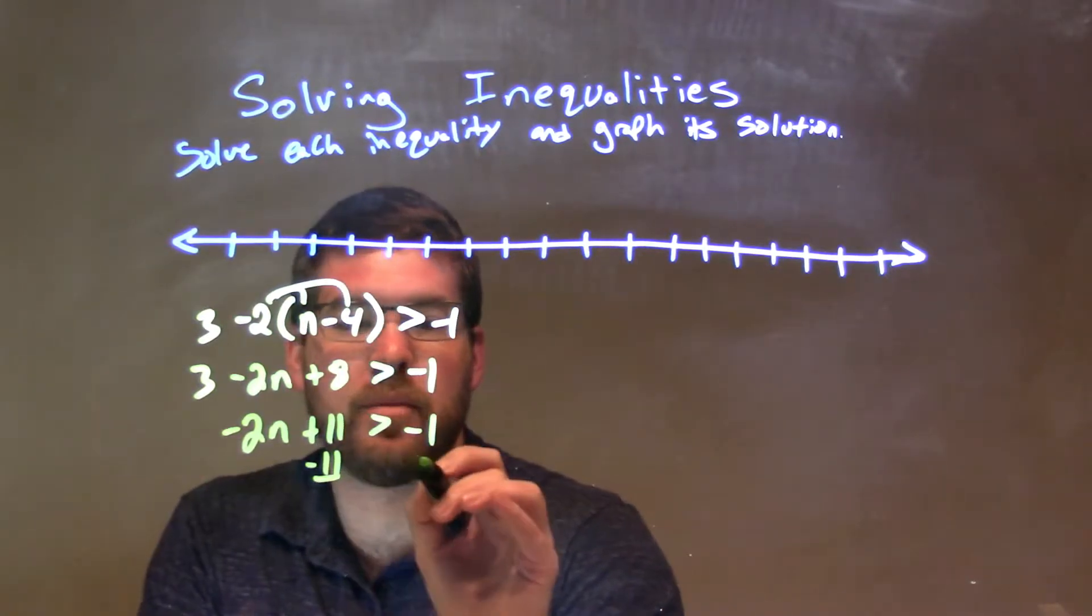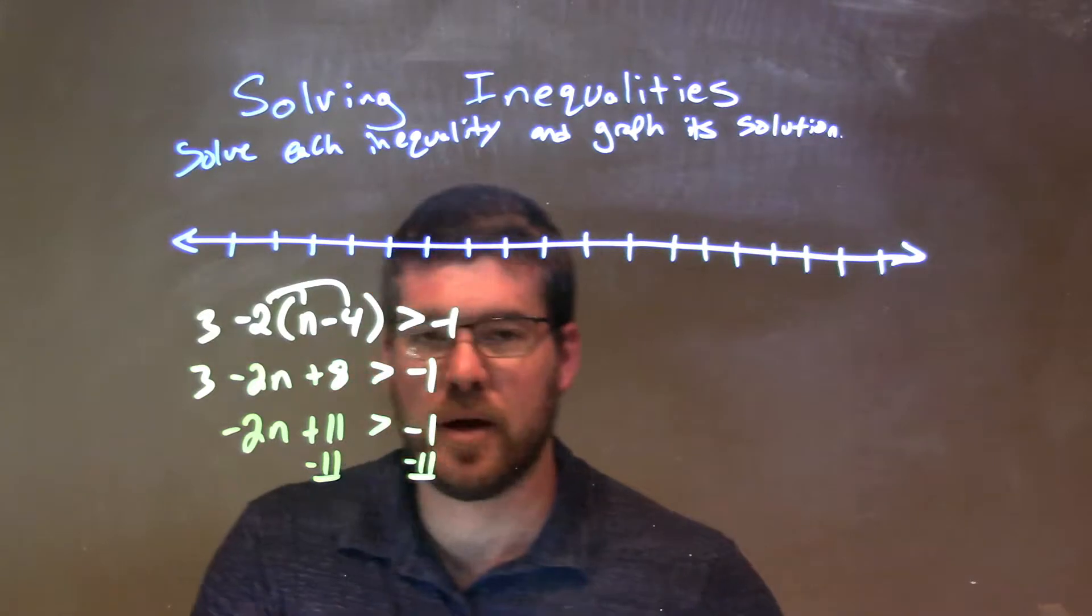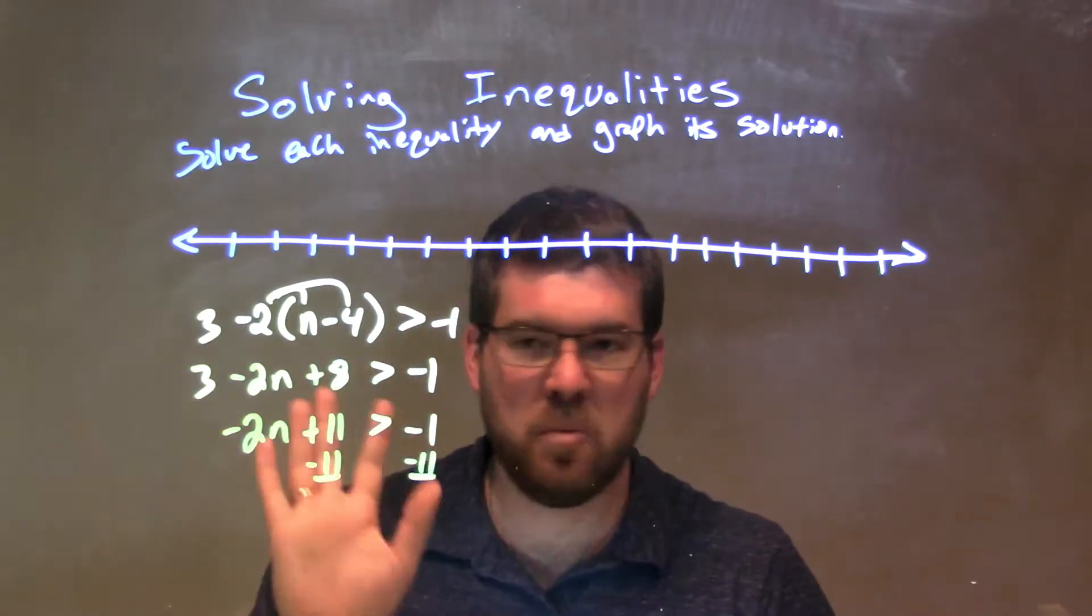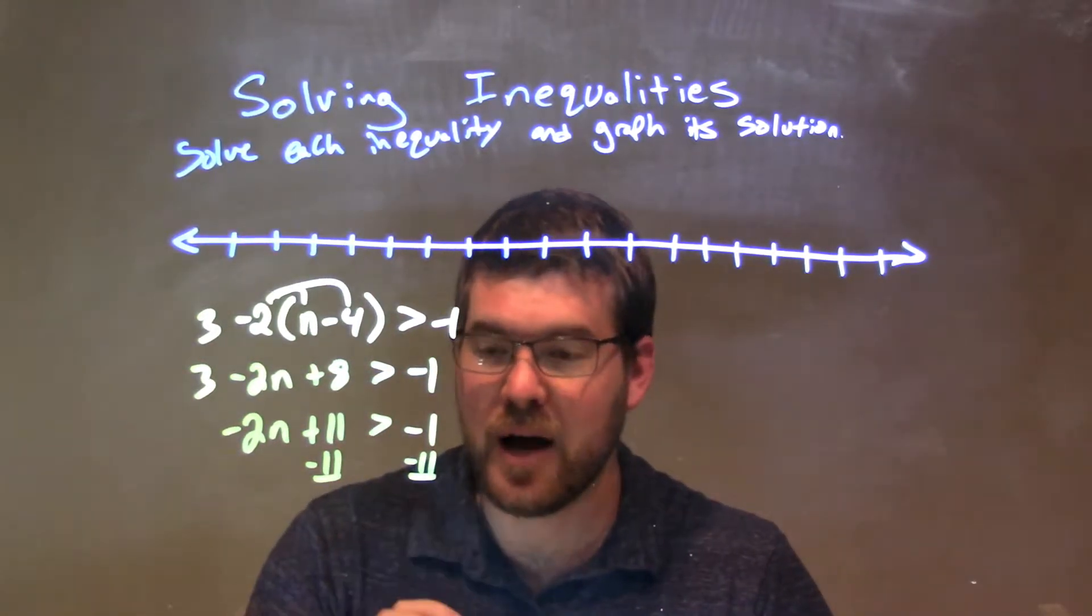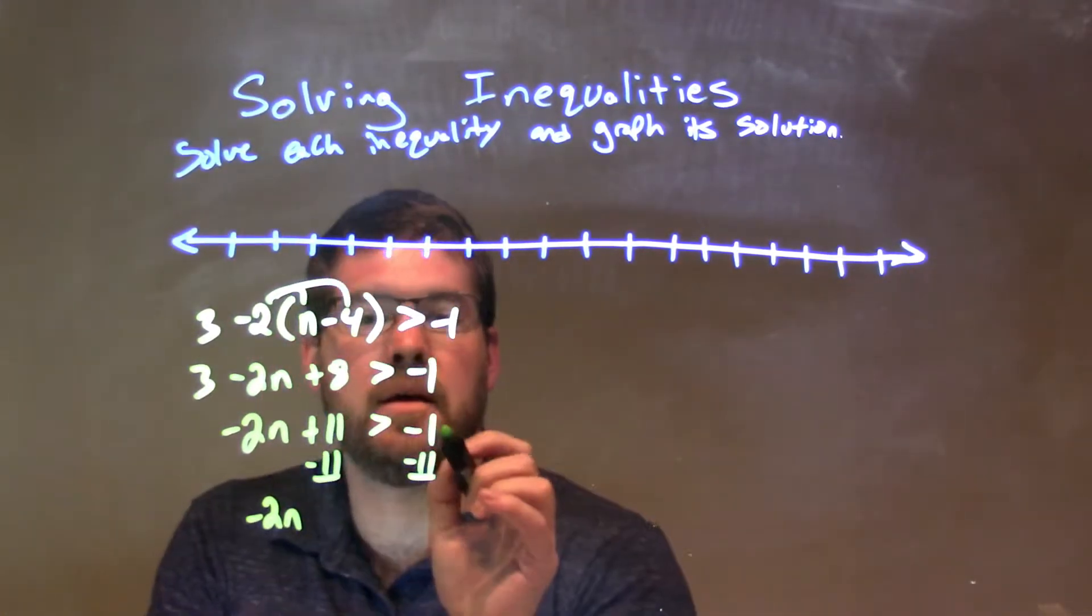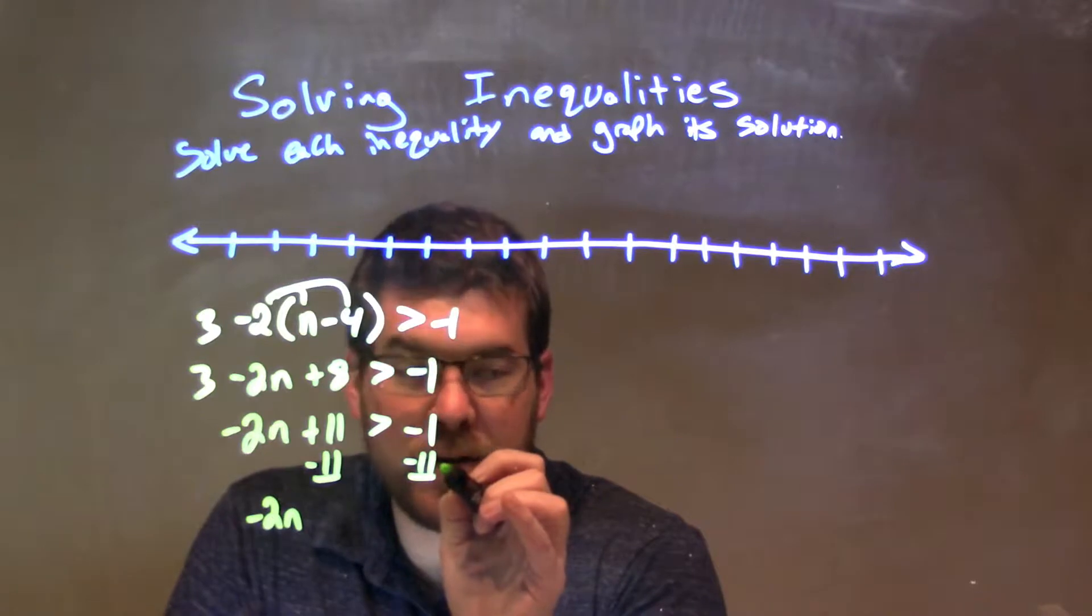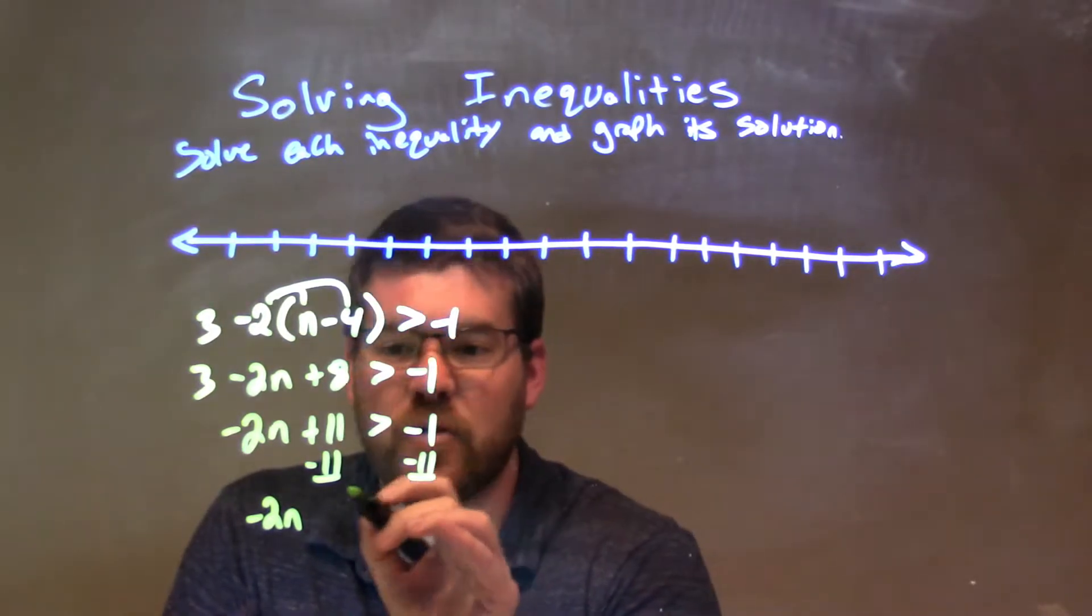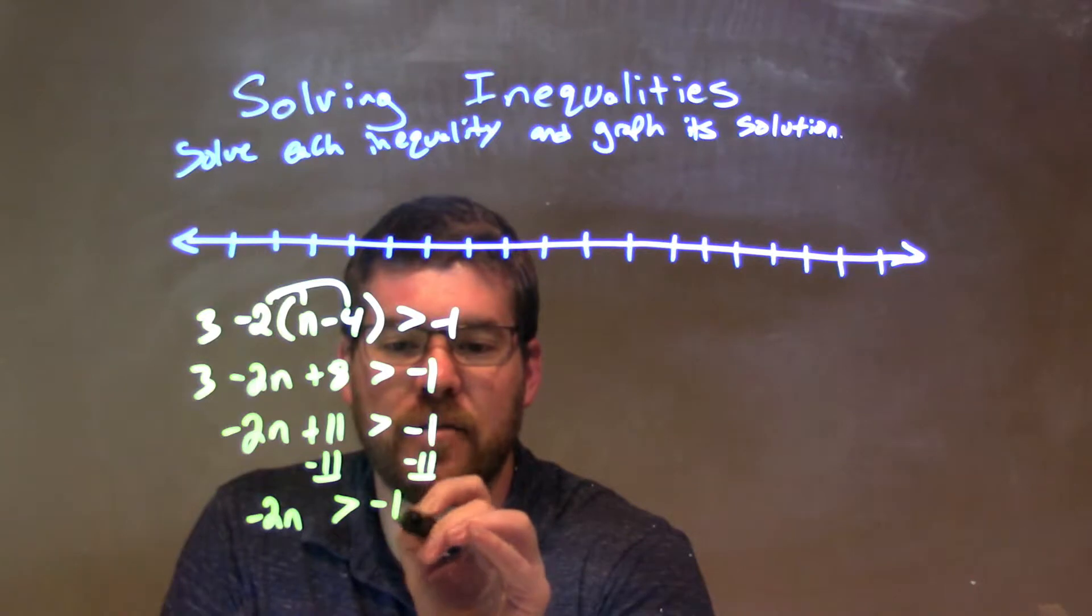I'm going to subtract 11 from both sides. Now, be careful. If we subtract over an inequality, we do not change the sign. So, negative 2n on the left, and then negative 1 minus 11 is negative 12. So, keep the greater than sign over the negative 12.